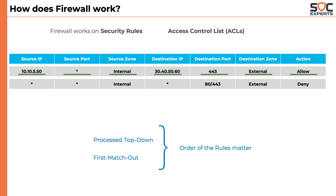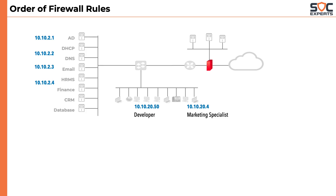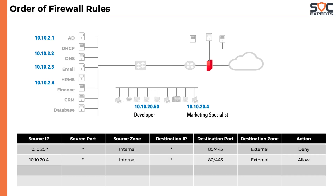Let's understand this with an example. In the given network diagram, let's assume we want to block everyone from using the internet in the company. Internet means web traffic, which means port number 80 and 443 — that is HTTP and HTTPS. But as per policy, we want the marketing team to have access to the internet. To block everyone from accessing the internet, we write a rule: source 10.10.20.x from any source port, coming from the internal zone, trying to connect to any destination IP on port 80 or 443 — the firewall should block the traffic.